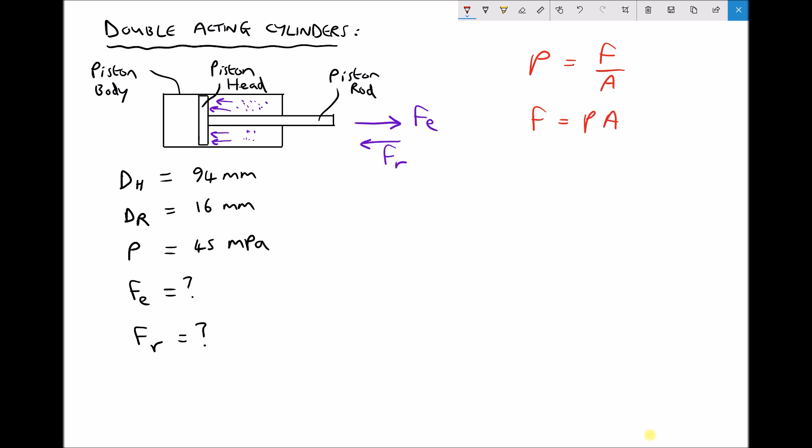Let's begin by calculating the force on the extension stroke. The force on the extension stroke is equal to the pressure in the system times the area. But it's the full bore area, and I'm just going to write F subscript B to indicate this. We know the system pressure is 45 MPa as given in the question. And we can calculate the full bore area because it's the area of our piston head.